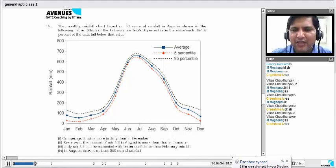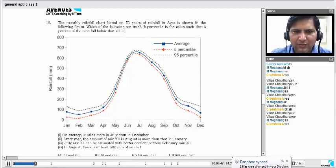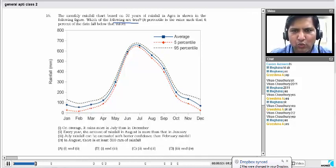So a 95 percentile means 95% of the data is less than that. So you have a graph and you have got 4 statements which are given to us. The question is which of the following statements are, which of the following 4 statements are true? So try to figure out which are the 4 true statements.